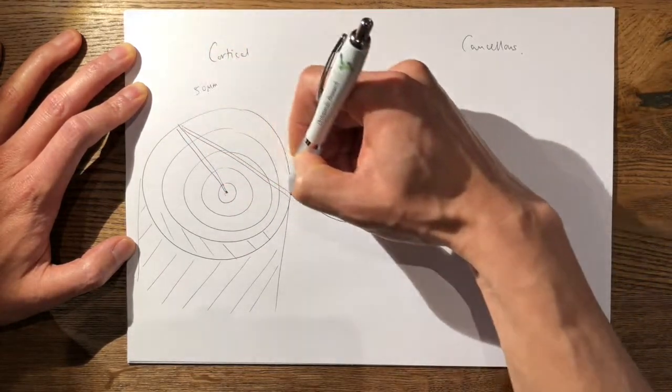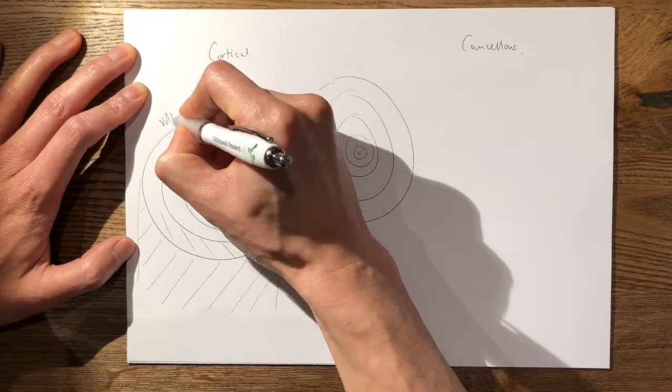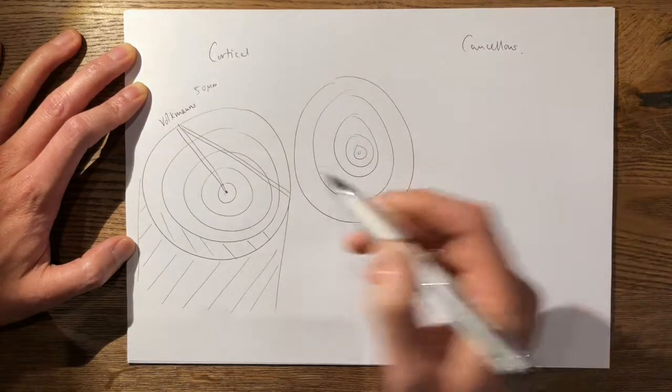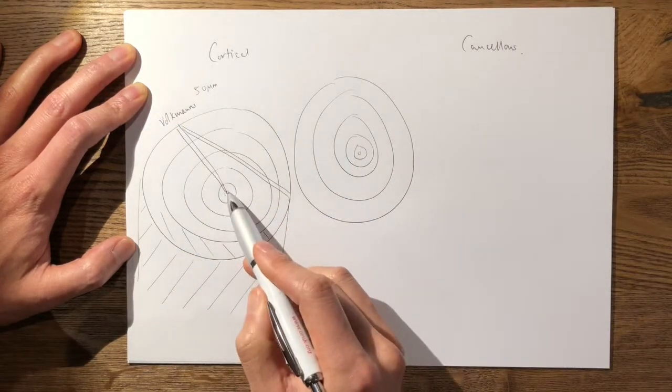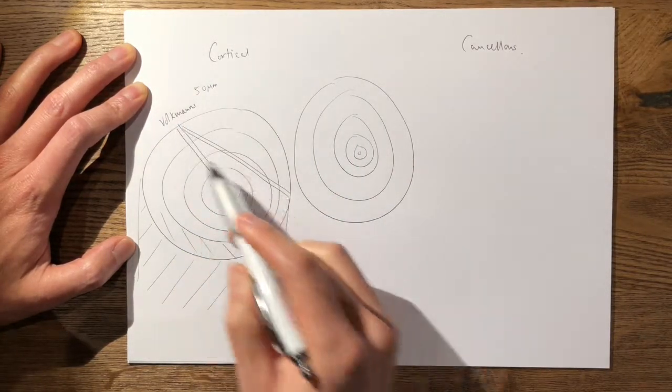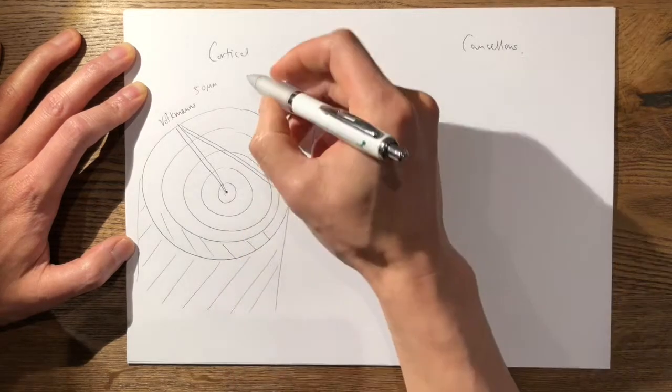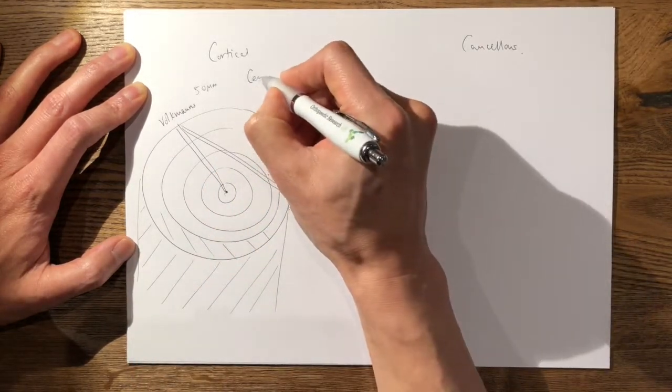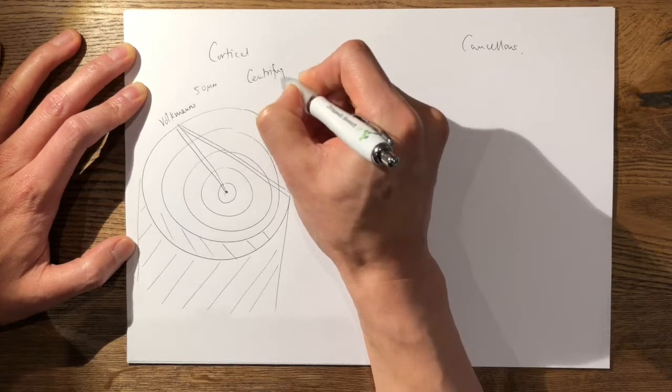These are your Volkmann's channels or Volkmann's canals, which are low pressure. So high pressure in the middle and low pressure on the periphery. You can say that the blood flow is from in to out, or centrifugal in nature.